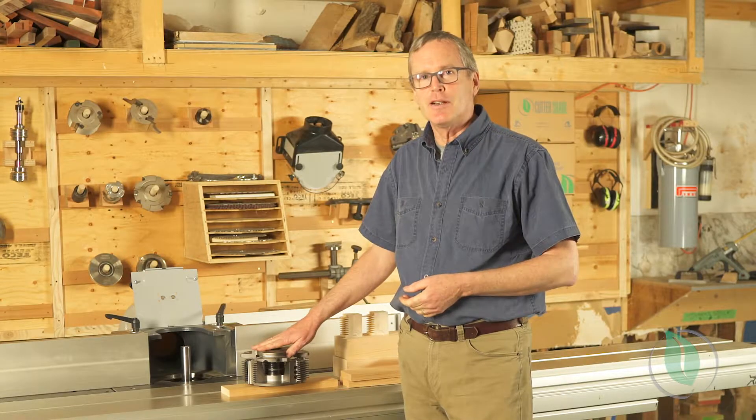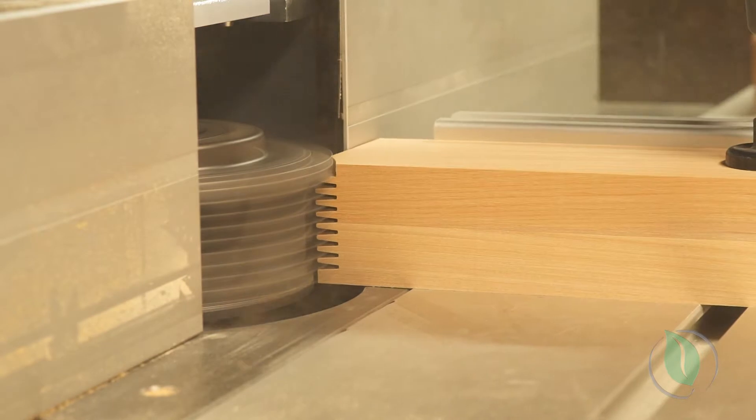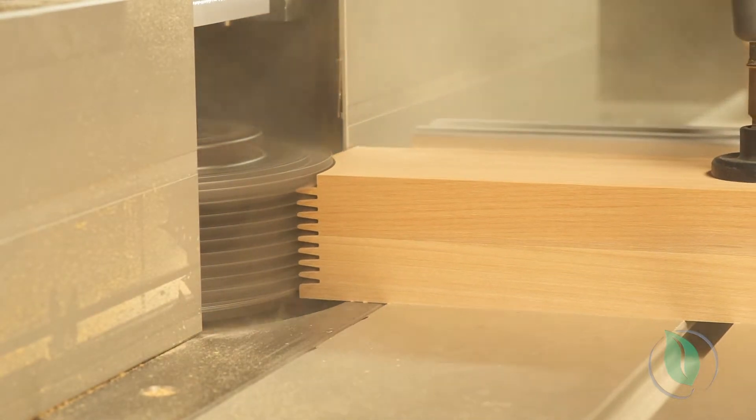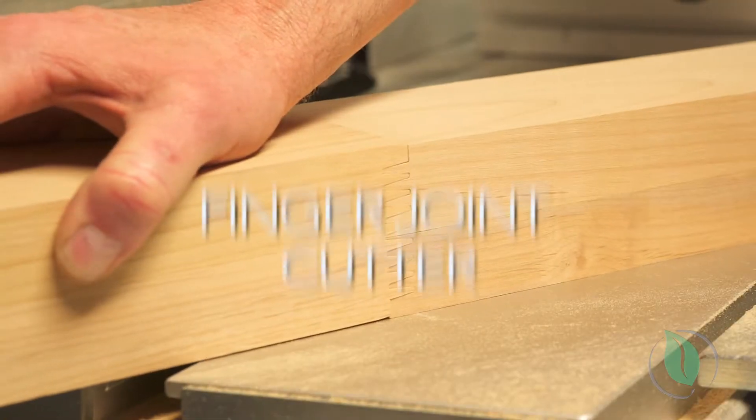We're going to set up and run our finger joint cutter now. Typical applications will be for joining segments into arch head rails, and the 11 millimeter fingers are long enough for joining parts end-to-end into longer lengths that are going to be further planed or profiled.